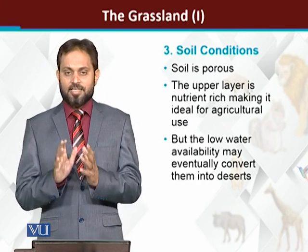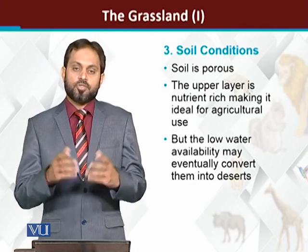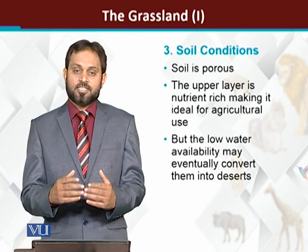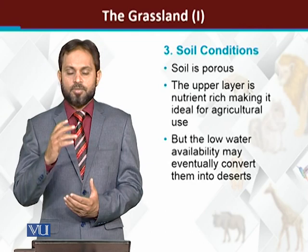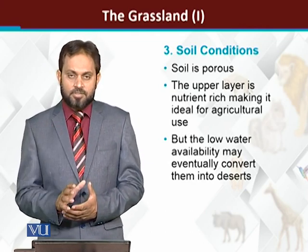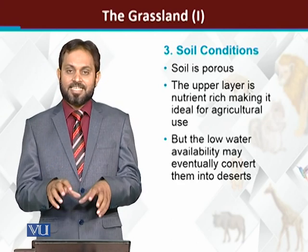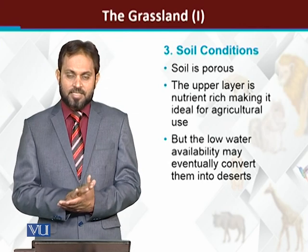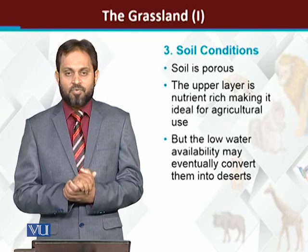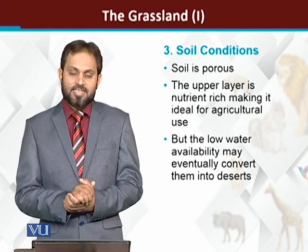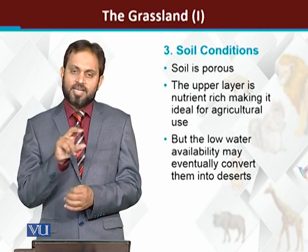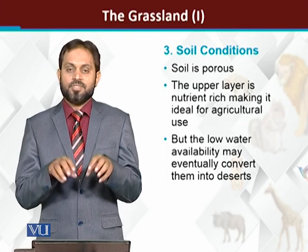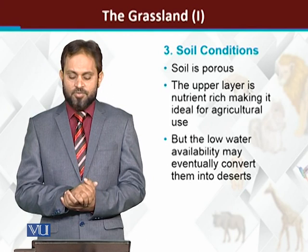Soil conditions: اگر grasslands کی soil بہت اچھی ہوتی تو وہاں trees grow کرتے، کیونکہ ecological succession میں climax biome وہ ہوتا ہے جس کے اندر trees grow کر رہے ہوں۔ اس کا مطلب یہ ہے کہ grasslands کی soil میں اتنی fertility نہیں کہ وہاں بڑے trees grow کر سکیں۔ Normally the soil is porous، جس کی وجہ سے water holding capacity کم ہوگی اور vegetation بھی کم ہوگی۔ صرف upper thin layer میں humus اور water holding capacity موجود ہوتی ہے — اسی وجہ سے ایسی grasses grow کرتی ہیں جن کی roots بہت زیادہ deep نہیں ہوتیں، وہ upper area کو use کرتی ہیں۔